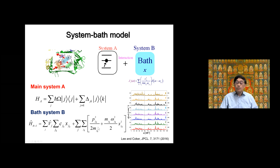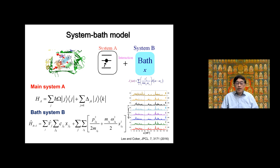This model works reasonably well because the heat bath is harmonic, so its distribution is Gaussian. In general, the system is perturbed by the environment, and because of the central limit theorem, in many cases the fluctuations are Gaussian. This harmonic heat bath also produces Gaussian fluctuations. Therefore, because of the central limit theorem, it works very well.